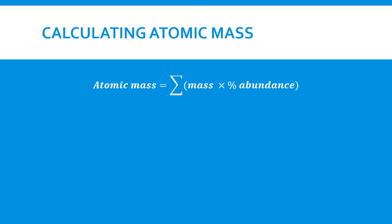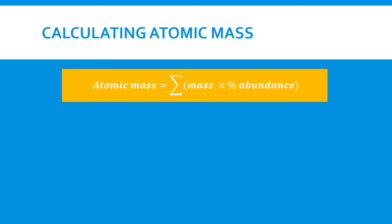To calculate the atomic mass of an element, multiply the mass of each isotope by its abundance and add the products. This sigma symbol means the summation. If we have two isotopes, we do mass times abundance for the first, then mass times abundance for the second, and find the sum of these.